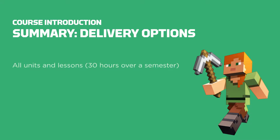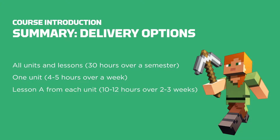Teaching all units and lessons is approximately 30 hours of instruction over a semester. A single unit of your choice is approximately 4–5 hours of instruction over a week. The first lesson from each unit is approximately 10–12 hours over 2–3 weeks, and an individual lesson of your choice each week is approximately 45–60 minutes.